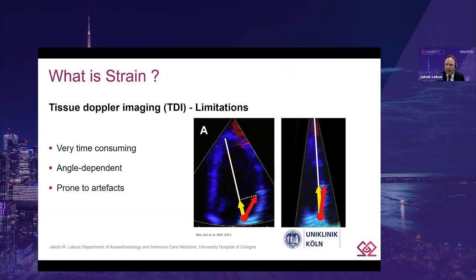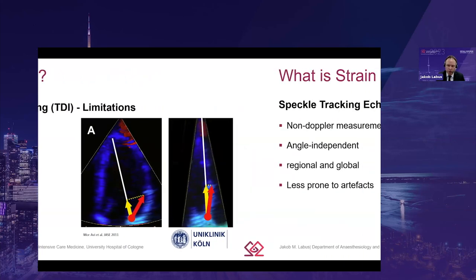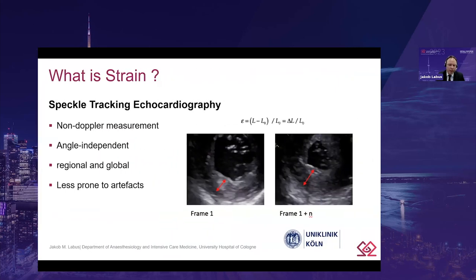This one-dimensional assessment has very good temporal resolution and allows direct display of measured data at a certain point without regulatory algorithms — so there is no cosmetic smoothing of measured values. But this technique is not widely used today, since it is extremely time-consuming, has angle dependency, is prone to artifacts, and is therefore difficult to interpret. Currently, speckle tracking echocardiography is used to measure myocardial strain, and this technique has unique properties — it is a non-Doppler measurement assessing regional and global deformation, and it is nearly angle-independent.